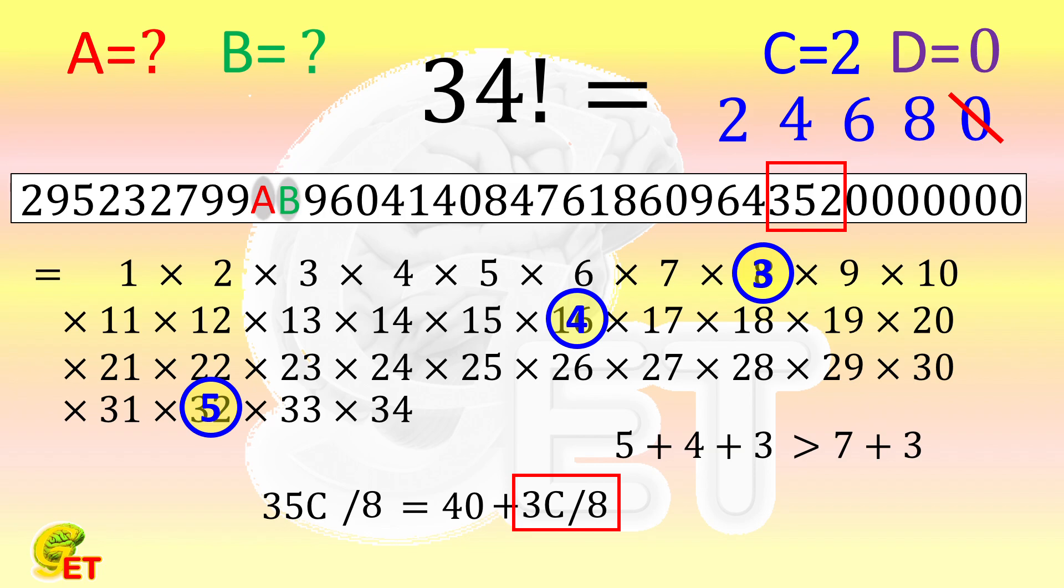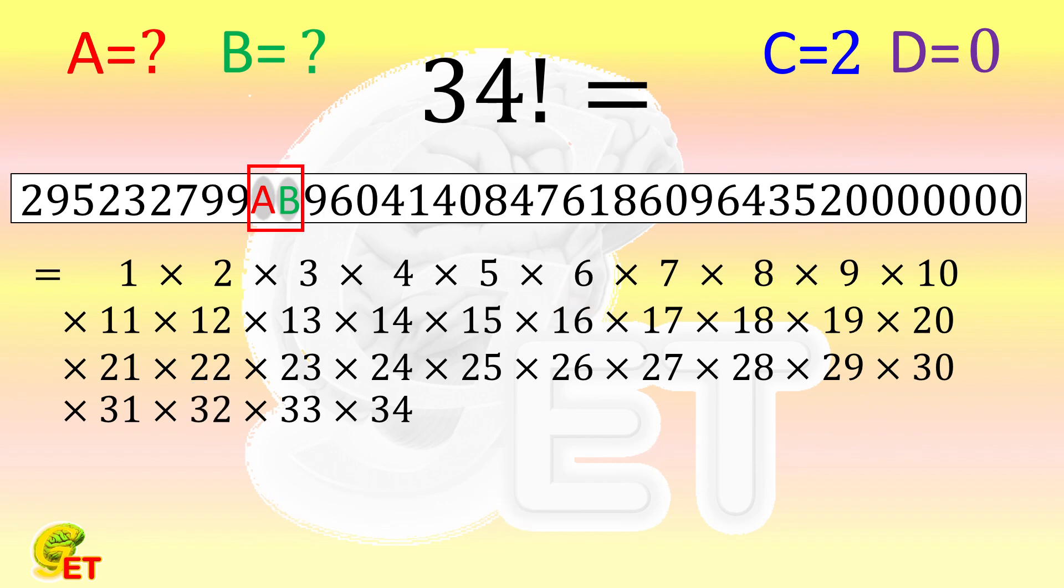After restoring the digits C and D, let's move on to A and B now. They are located closer to the middle, and the easiest way to analyze those digits is to consider the divisibility by 9 and 11. Obviously, this number does have a factor of 9, and a factor of 11.